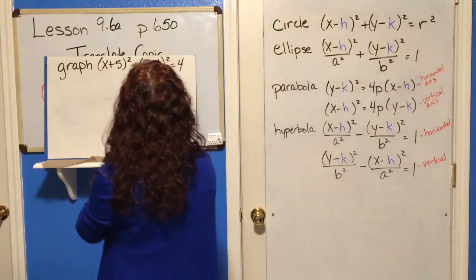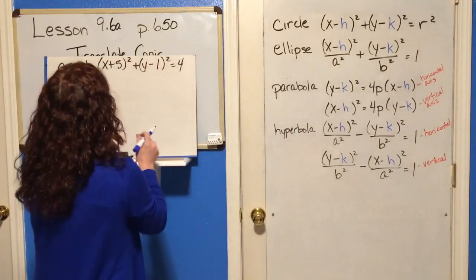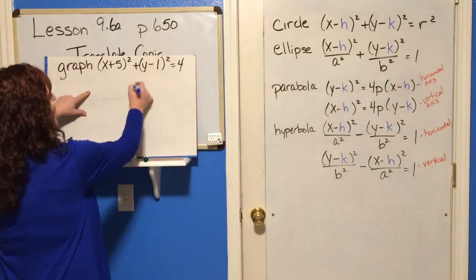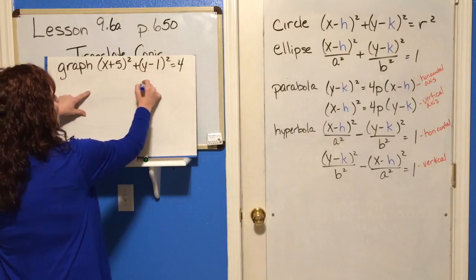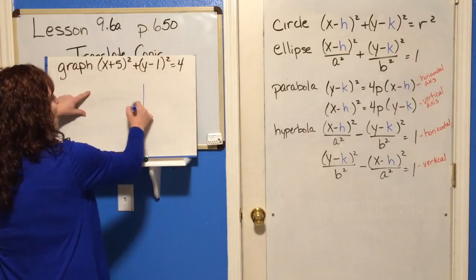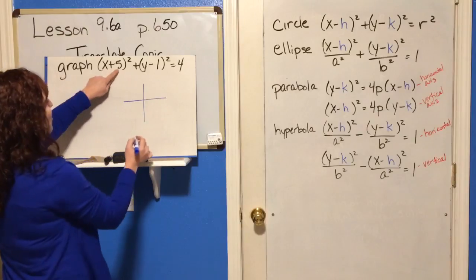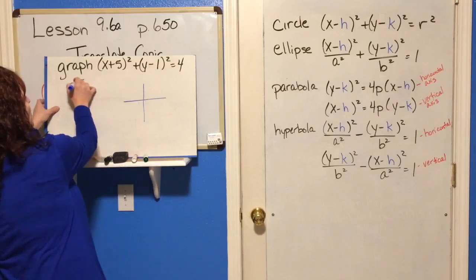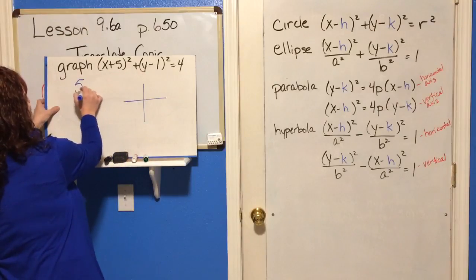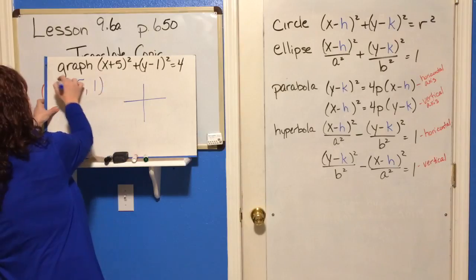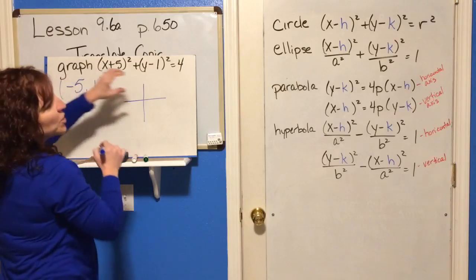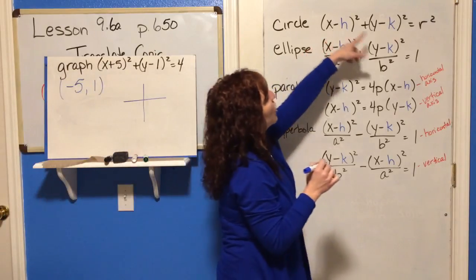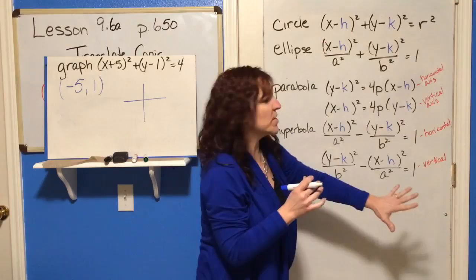We've got a perfect square here, so if we put our center at 5, 1 — well, the center is actually negative 5, 1. On all of these conics, your H and your K are negative on every single one.